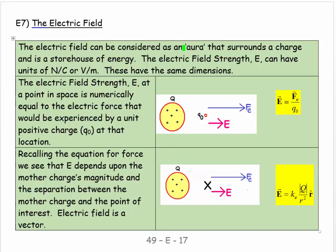The electric field can be considered as an aura that surrounds the charge and is a storehouse of energy. It's an abstraction. It's real. It's there. There's clearly an influence. A charge clearly has an influence on the space around it. But it's not like a glowing thing. By the same token it's not like something that's completely made up.